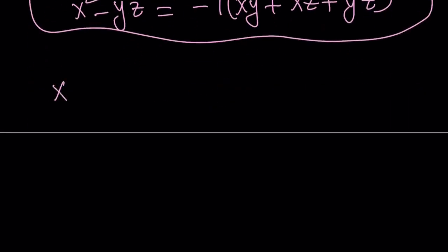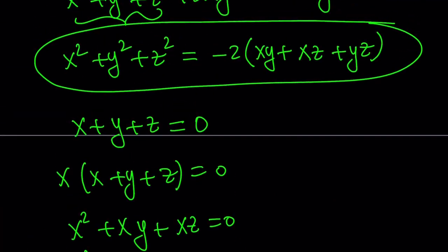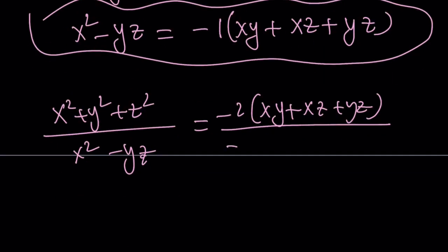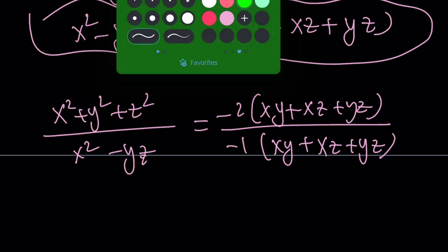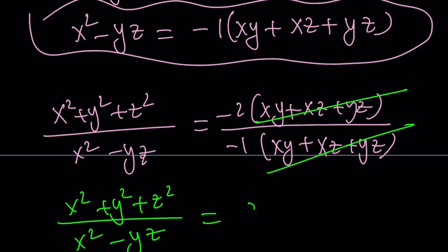Now let's put it together. Our expression was x squared plus y squared plus z squared divided by x squared minus yz. I replace the numerator with negative 2 times xy plus xz plus yz, and the denominator with negative 1 times the same quantity. Those cancel, giving an answer of 2 — just like the first method. Our expression has a constant value of 2 under these conditions.